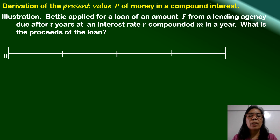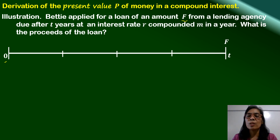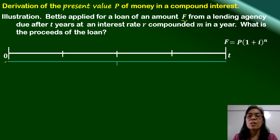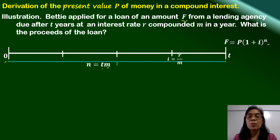We have here the beginning period and after 30 years. Betty has already determined how much she will be paying at the end of 30 years, and that amount is F. We know from our previous lesson that F is equal to P times 1 plus i raised to n. After 30 years, n is the total number of compounding periods, determined by multiplying the number of years t times m, which is the number of times the money is compounded in a year. And i, the period rate, is equal to the annual interest rate divided by the number of compounding periods in one year.